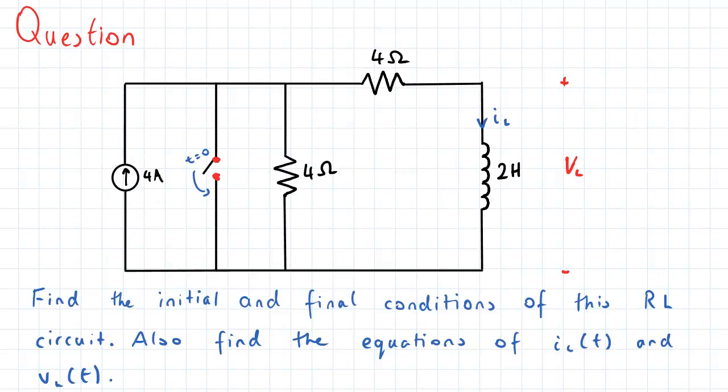So in our question, what we have is an RL circuit. We have a 2-Henry inductor and two 4-ohm resistors in this certain configuration over here. Now we have a switch over here, and at time t equal to zero, this switch is closed.